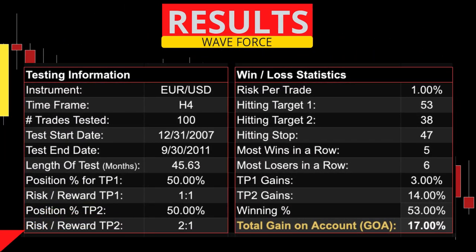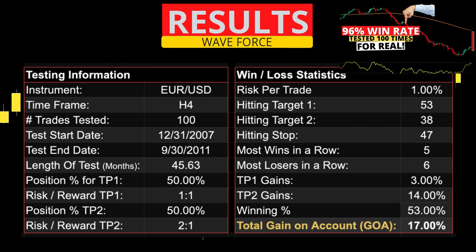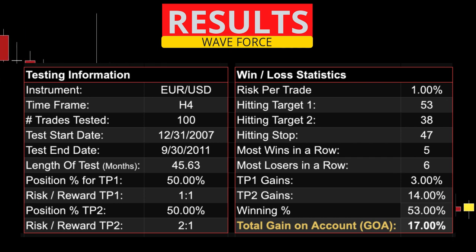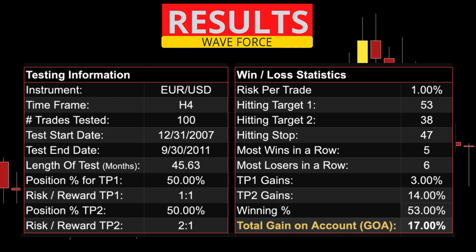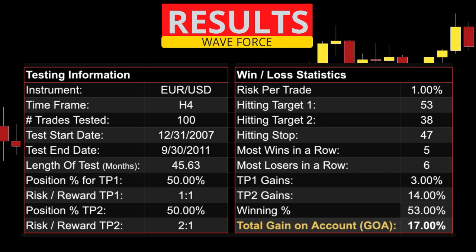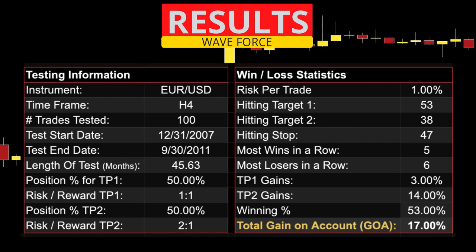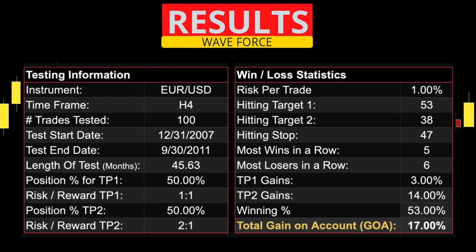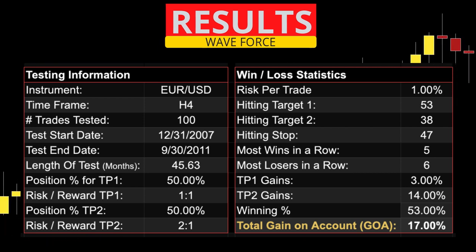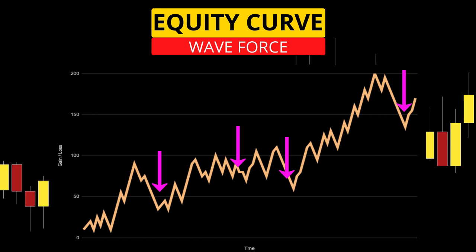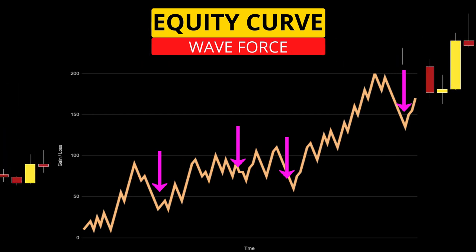Remember this is just 100 trades on one instrument. If you are thinking of using the system, please do all the required testing and be sure to let the community know what you discover. This test was done on the euro versus the US dollar four-hour candles, and it took about 46 months to find the 100 trades. We had 53 hit our one-to-one target, and of those 53, 38 went on to hit one-to-two before stopping out. Most wins in a row was five and most losses in a row was six. Gain on the account risking one percent per trade would have been a mediocre 17%, but I think this can be significantly increased. When you compare this equity curve with other systems tested on this channel it seems very choppy, which is a red flag — this system is not optimized.